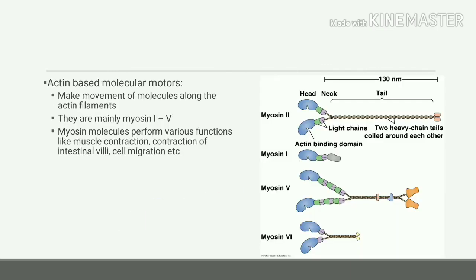Actin-based molecular motors are a superfamily of molecular motors that produce movement of molecules along actin filaments. These are myosins, and there are different types of myosins, from myosin-1 to myosin-5.